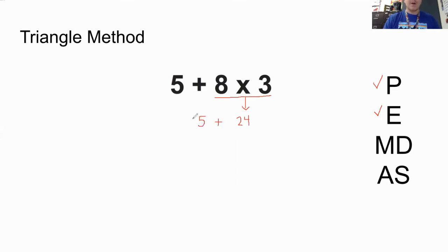So now I have 5 + 24. Then I look at this expression again. Do I have any more multiplication or division? Nope, I don't. So that's done. And then do I have any addition or subtraction? I do. So I underline this step, 5 + 24 = 29. And that's our answer.